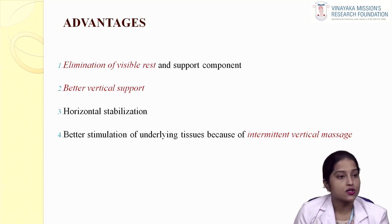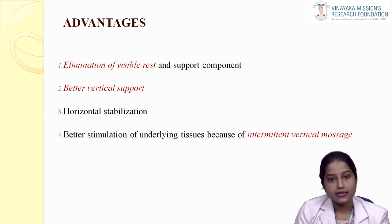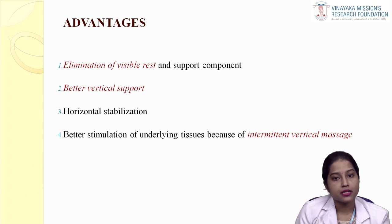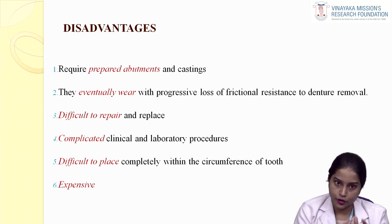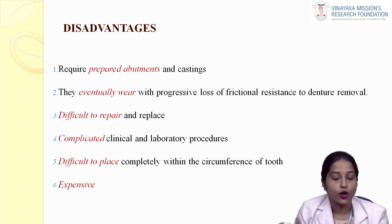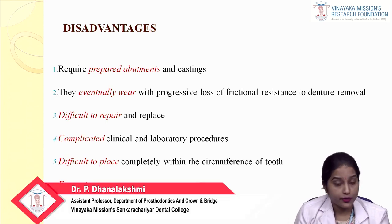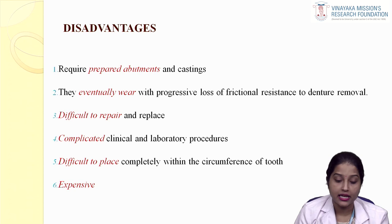The advantages of having an attachment include elimination of visible rest and support components. Since these attachments transfer forces nearly close to the long axis of the tooth, there is better vertical support and horizontal stabilization. Also, since these components allow a little bit of movement of the prosthesis, there is intermittent vertical massage to the underlying gums. Disadvantages include the need to devitalize the tooth to prepare it to receive the metal receptacle, wear of matrix and patrix due to frictional resistance, difficulty in repair and replacement, complicated clinical and lab procedures, difficulty placing attachments within contours of anterior teeth, and higher expense.